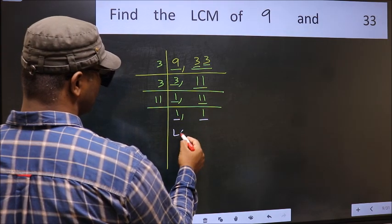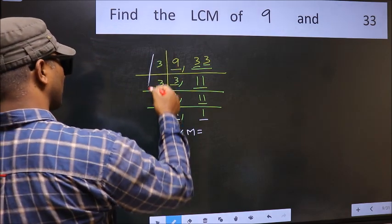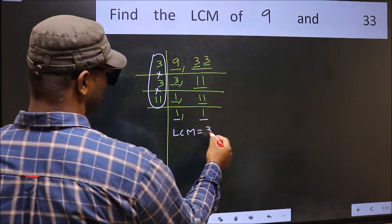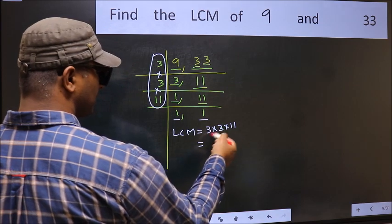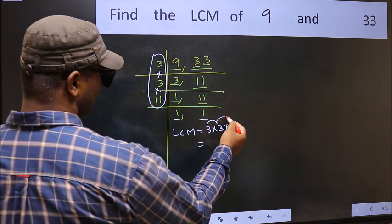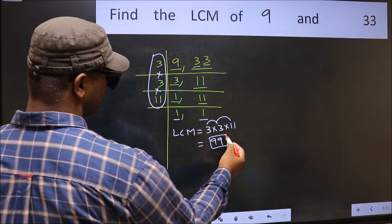So our LCM is the product of these numbers. That is 3 into 3 into 11. Let us multiply these numbers. 3 into 3, 9 into 11, 99 is our LCM.